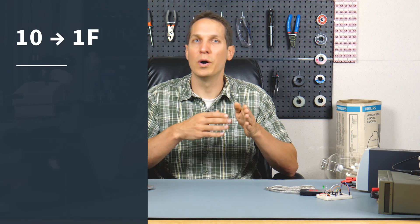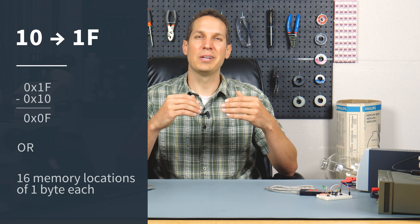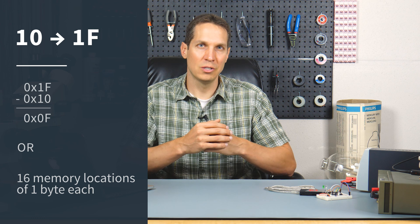Those are the two most important registers to start with. The others are briefly covered in the written tutorial but aren't critical at this point. Since the special function registers go up to address 10H, the variable space runs from 10H to 1FH. That gives us 16 bytes of variables — 16 bytes of RAM — before we run out of space. The PIC10F200 is a very simple, very small microcontroller, but we'll still be able to do some pretty impressive things with it.